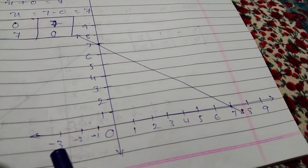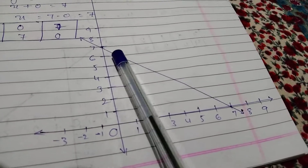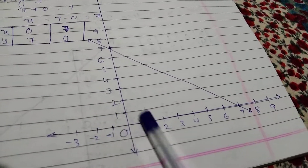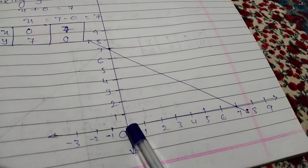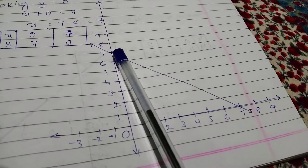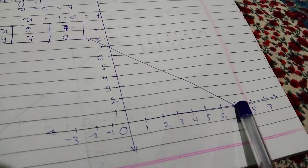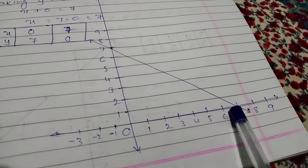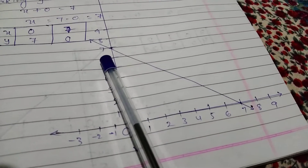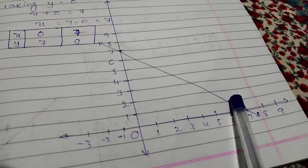On the x-axis and y-axis: when x = 0 and y = 7, put a point on the y-axis at 7. When x = 7 and y = 0, put a point on the x-axis at 7. Join these two points together - that gives you the graph of x + y = 7.